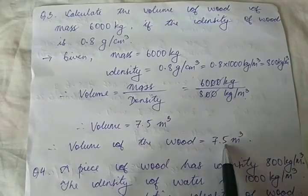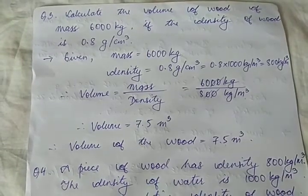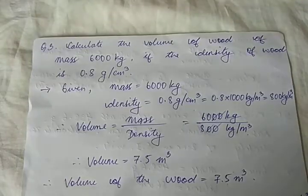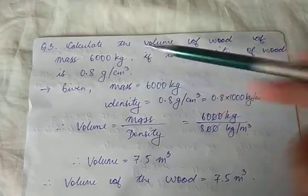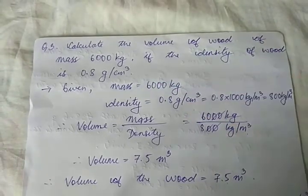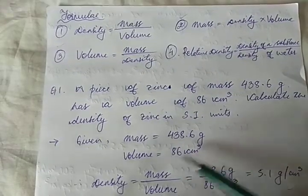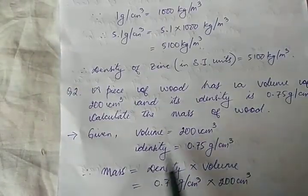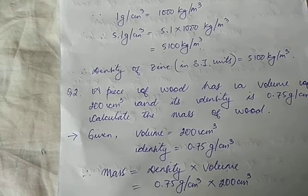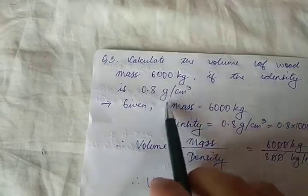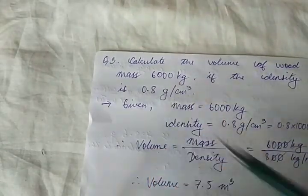Therefore, the volume of wood is 7.5 m³. Remember: we must always work in the same system of units — that is why we converted. In the previous problems, mass and volume were both in CGS, so there was no issue. Here, mixed units required conversion.